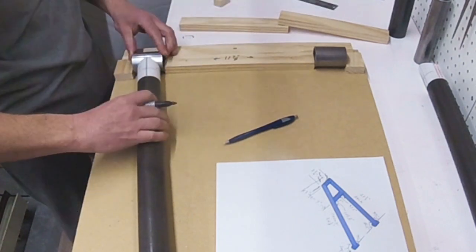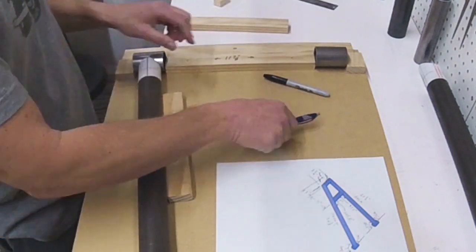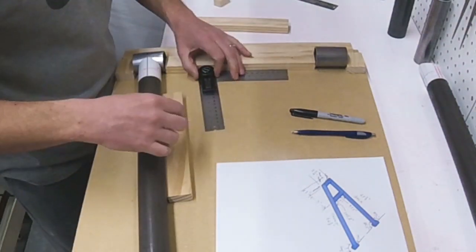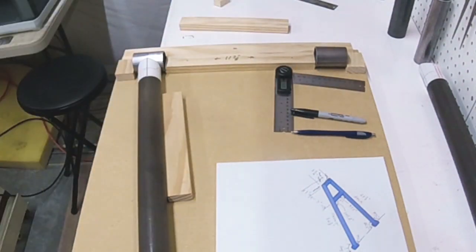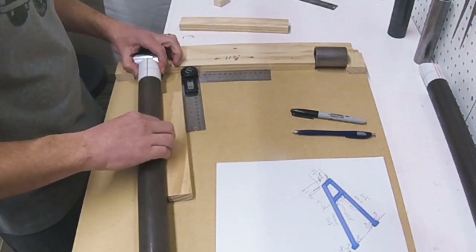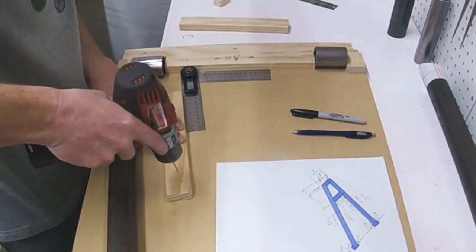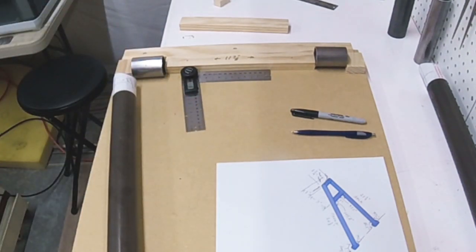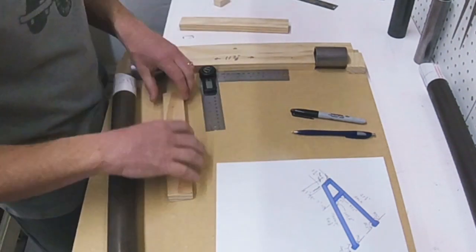You can get thinner masonite, save a couple of bucks, but this 3/4 inch stuff really does a good job at holding itself flat, giving you a good surface to work off of. And there's more material for the screws to bite into when you're screwing the pieces in place like I'm doing here.